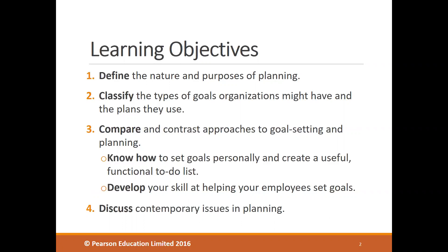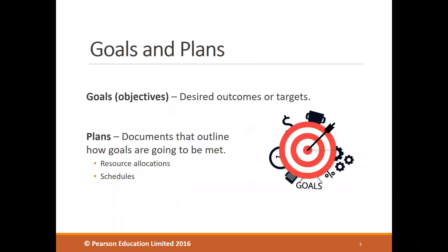Planning is referred to as the primary management function — the most important one — because it establishes the basis for all the other things managers do as they organize, lead, and control. It involves two important aspects: goals and plans.